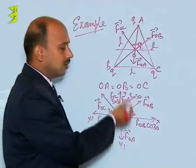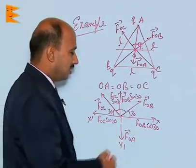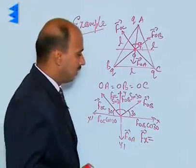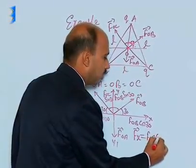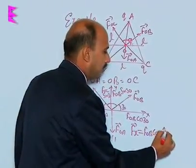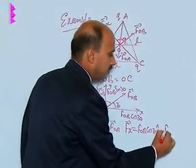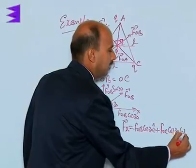Now we can solve along the x-axis. So we can get Fx is equal to total force along x-axis is equal to FOB cos 30 i cap plus FOC cos 30 minus i cap.